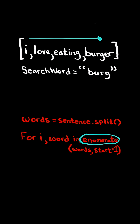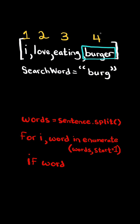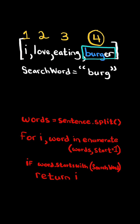Using the enumerate function, we then iterate through the index and words in the list. We can pass in a start value in the enumerate function, and this makes it so that we start counting indices from one. If the word we happen to be on starts with the search word, then we return the index we are on. If we went through the list and couldn't find a word that starts with search word, at the end we return negative one.